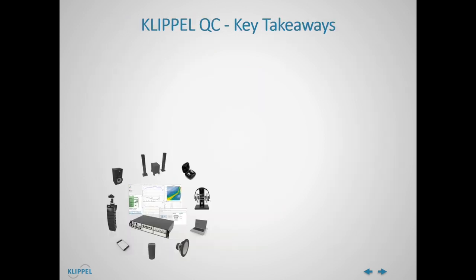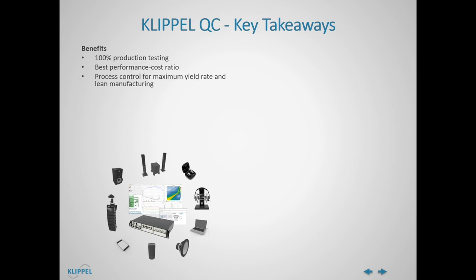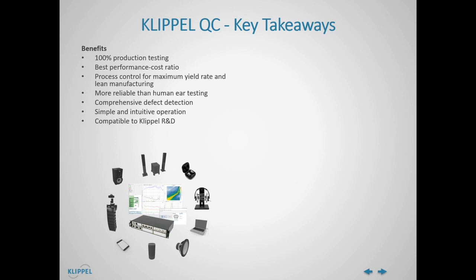Now let us wrap it up and summarize the key benefits and features of Klipple QC. It is dedicated to 100% production testing and provides the best performance-cost ratio. It provides means for process control in order to maximize yield and to fulfill the requirements of lean manufacturing. Testing is more reliable than the human ear, providing all means for comprehensive defect detection. The operation is simple and intuitive, the results are compatible to the Klipple R&D system, and overall it's a flexible and modular solution to match your company's needs.